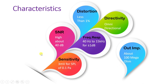To summarize the characteristics of the condenser or capacitor microphone: sensitivity is 3 millivolts; SNR is very high at about 40 dB; frequency response is from 40 Hz to 15 kHz; distortion is less than 1%; directivity is omnidirectional; and impedance is very high at about 100 megaohms. This makes it usable in hi-fi sound systems.